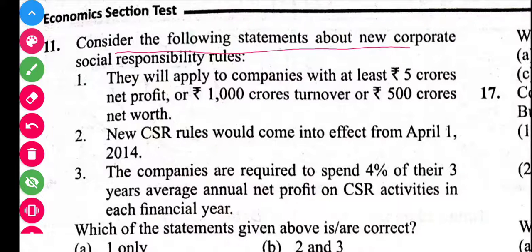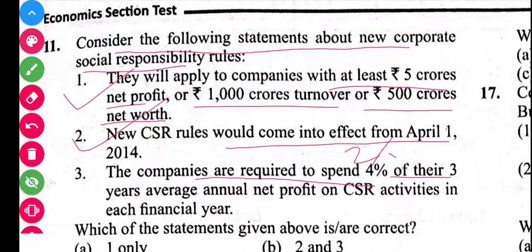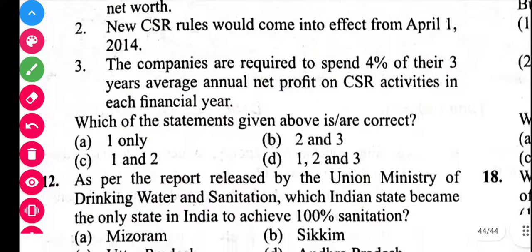Consider the following statements about the new Corporate Social Responsibility rules. They apply to companies with at least 5 crore net profit, 1,000 crore turnover, and 500 crore net worth — correct, as per the recent amendment to the Companies Act 2013. The new CSR rules came into effect from April 1, 2014. Companies are required to spend 2%, not 4%, of their 3-year average annual net profit on CSR activities. Statements 1 and 2 are incorrect, so the answer is C.